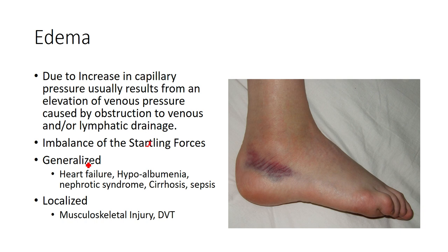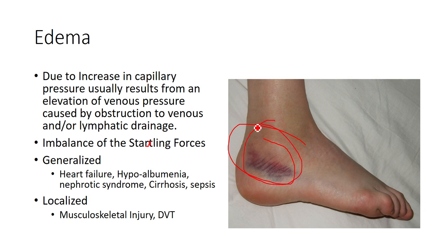We can also see localized edema — for example, if someone rolled their ankle, you can see bruising and swelling localized in one area. Generally when swelling is more generalized, you're a little more concerned for a systemic cause. If you start seeing bilateral swelling, someone probably didn't roll both ankles at the same time — there's probably more of a systemic issue. This is part of that algorithm of clinical decision making.